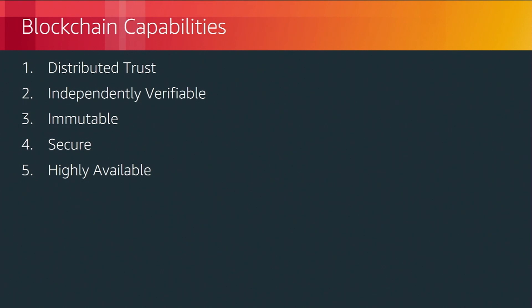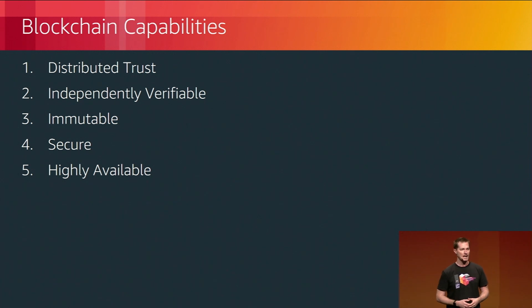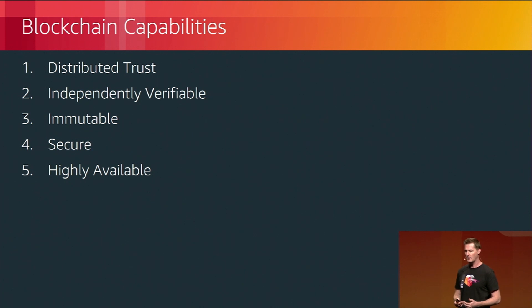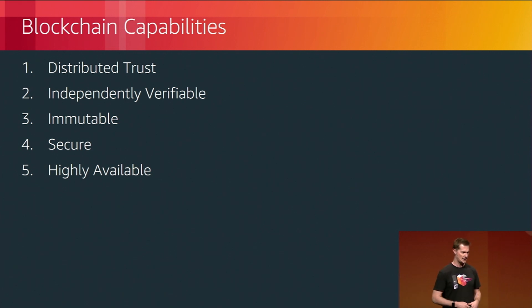First I want to cover a few capabilities of blockchain and why it is a good place to run your smart contracts. First of all, it allows distributed trust — it allows parties that don't necessarily trust each other to interact in a trusted way. It does this by having independently verifiable contracts: once a transaction has been inputted into the blockchain, it's possible for any of those actors within that network to verify that that transaction has in fact occurred.